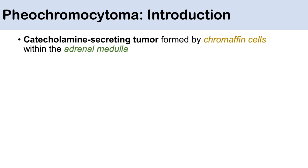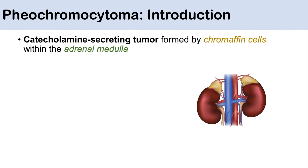Pheochromocytoma is a condition due to a catecholamine-secreting tumor formed by chromaffin cells within the adrenal medulla. The adrenal glands sit atop the kidneys. If we were to transect one, there is a cortex — the outer portion — and an inner portion called the medulla. Pheochromocytoma is a tumor of chromaffin cells inside the medulla.